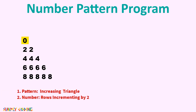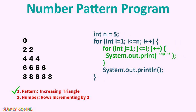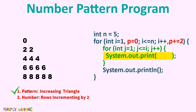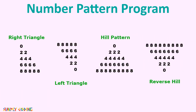Now let's look at a pattern where the first row starts with 0, then 2, then 4, 6, and 8. Again, we take the shape pattern program first. In the outer loop, we set the initial value of p to 0 and increment by 2. In the print statement, we print p. By using the same logic — selecting the right pattern program and just changing the start value and increment value in the outer loop — you can create any of these number patterns.